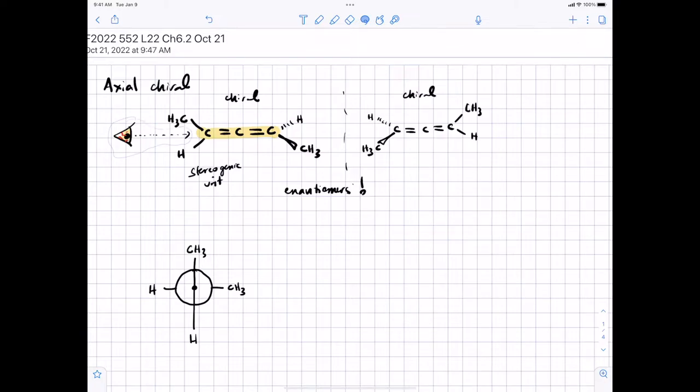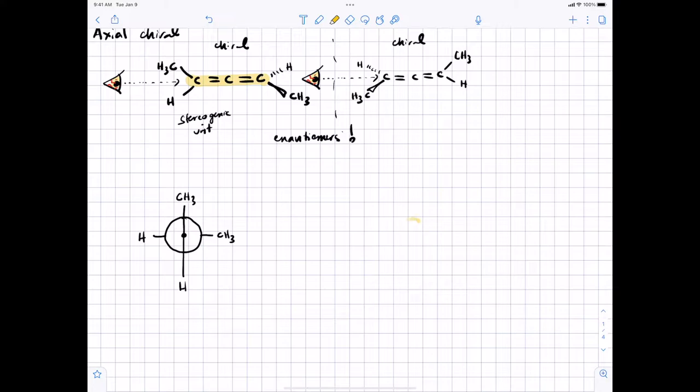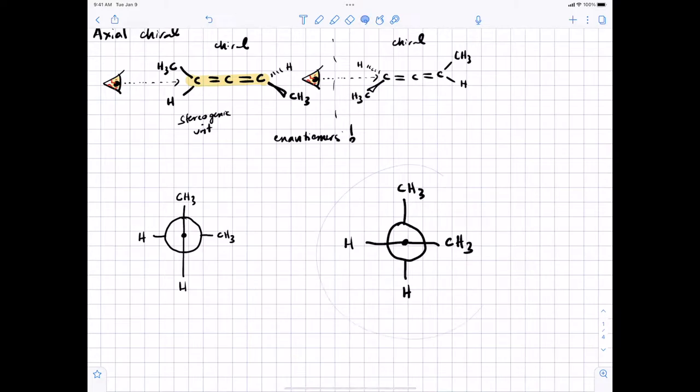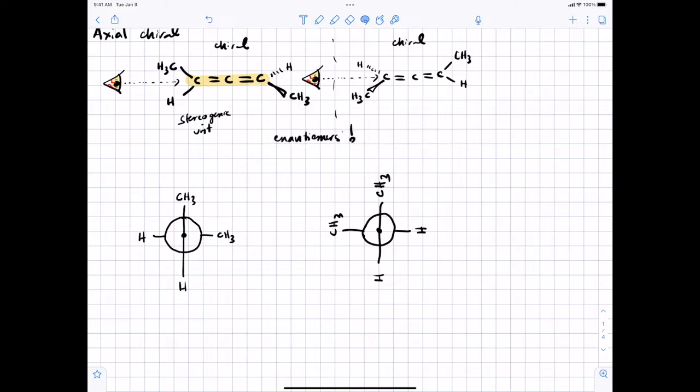From our perspective, we would see the methyl group going straight up and the hydrogen going straight down, there's a carbon in the middle. And then in the back, we would see a methyl group here and a hydrogen there. We can then take this and you can see even in the Newman projection, these are mirror images of each other.